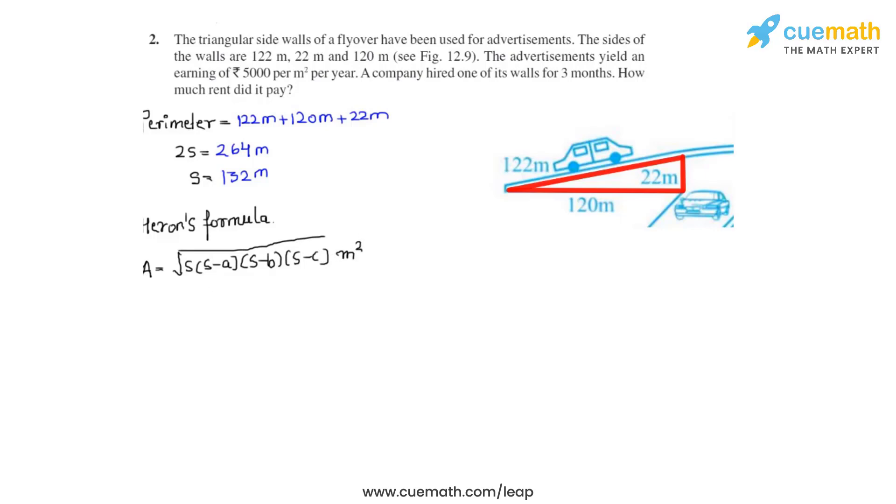As you know all of these values, let's substitute them in. So we get 132 times 132 minus 122 times 132 minus 22 times 132 minus 120.